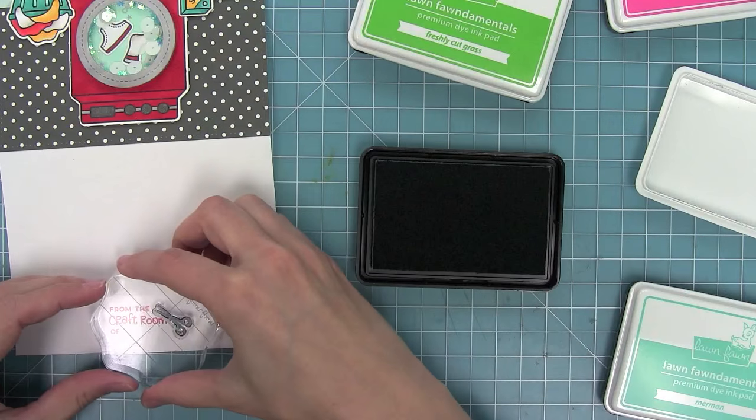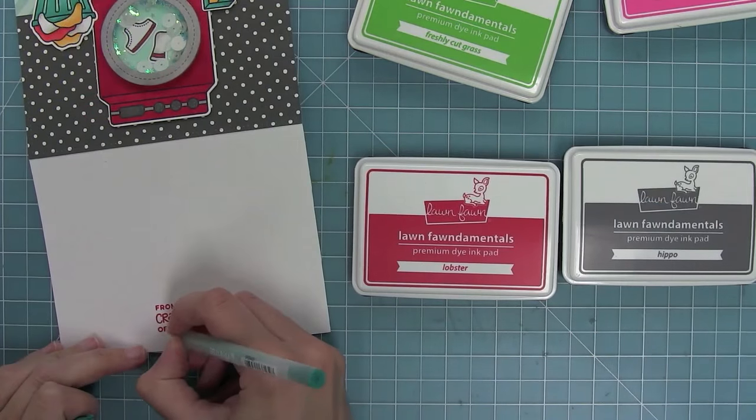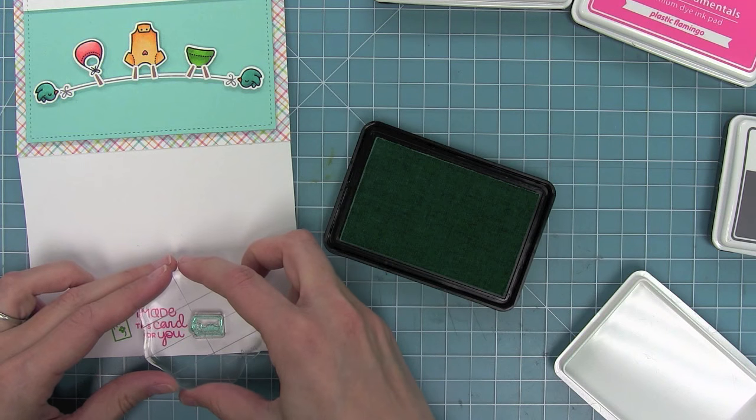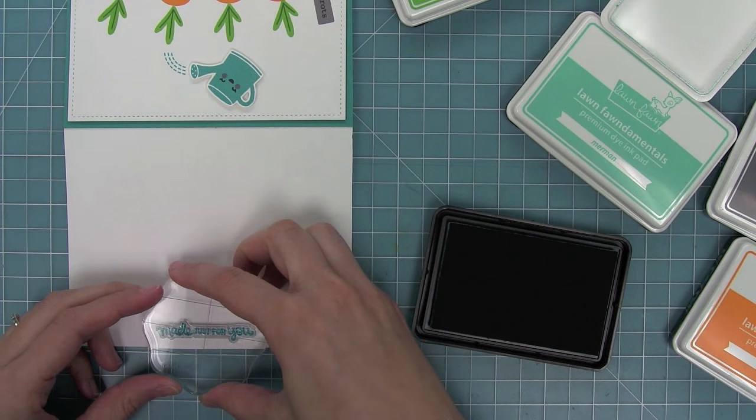So here we have Made Just For You with those adorable flowers. From the Craft Room Of, and then I can go ahead and write my name, and I'm using a coordinating color there too, so it kind of all goes together. I made this card for you with those two little card stamps on either side. I think is so cute.